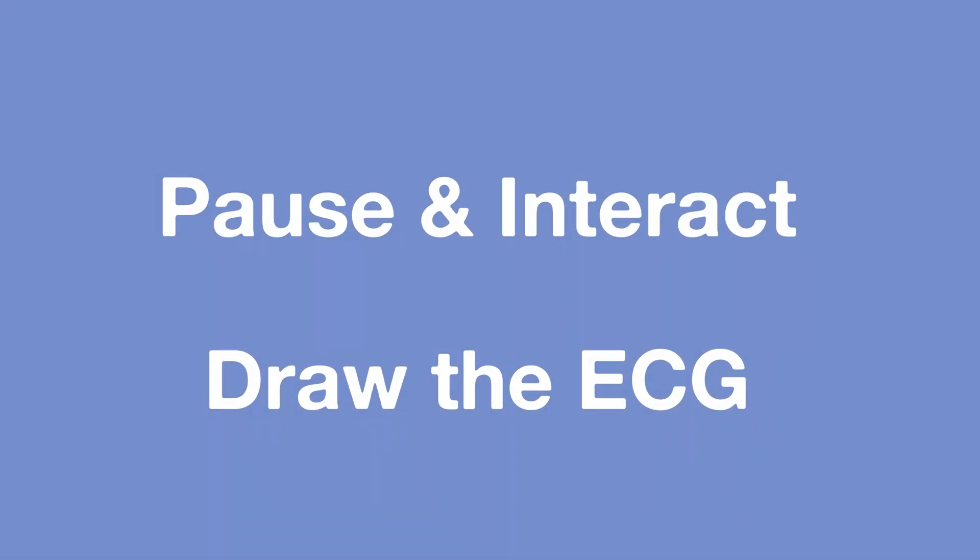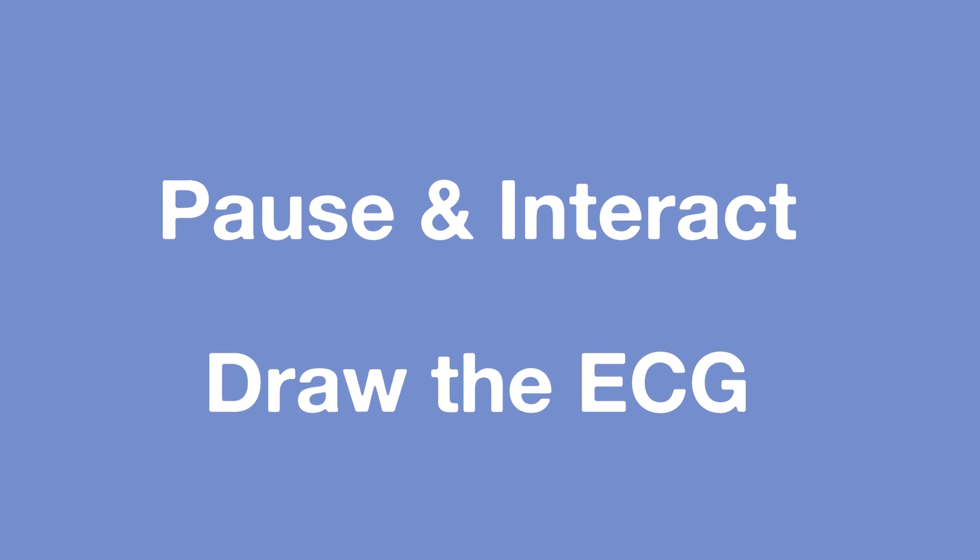Starting with ventricular tachycardia, think about the difference between a ventricular and supraventricular rhythm. When we talked about it last time, we said if a rhythm starts in the ventricle you're going to get a slow escape rhythm, which presents on an ECG as a broad QRS complex. So because ventricular tachycardia is a tachycardia, it's fast and sustained, and because it's ventricular, it's going to be broad.